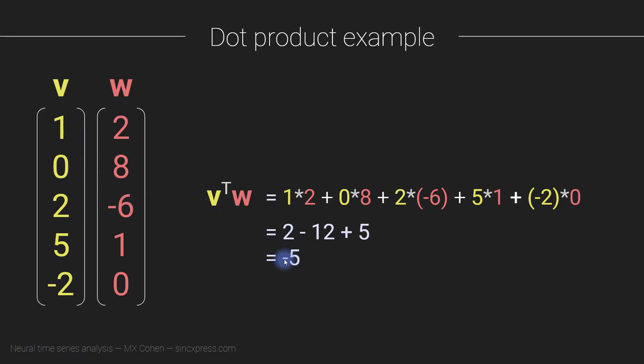In a few moments, I'll tell you how to interpret the sign of the dot product. But first, I want to show you an example of why the two vectors have to have the same number of numbers for the dot product operation to be valid. Here we have a vector with five elements and a vector with only three elements. If we try to compute the dot product between them, we have one times two plus zero times eight plus two times minus six. So far, that's fine. But now we get to the five here and there's no corresponding element to multiply the five or the minus two. So this dot product operation is no longer valid.